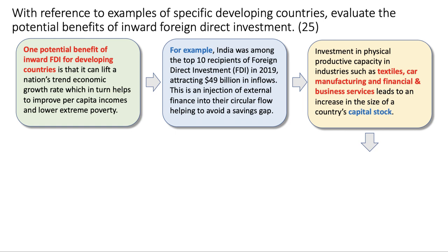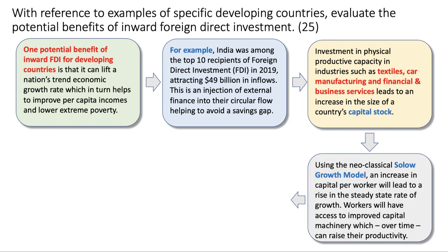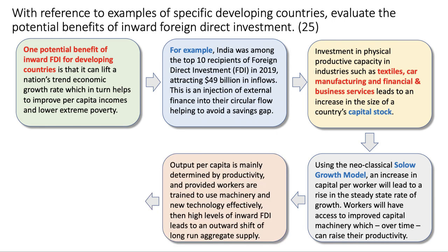Investment in physical productive capacity in industries such as textiles, car manufacturing, and financial services leads to an increase in the size of a country's capital stock. Using the neoclassical Solow model — or you may have used the Harrod-Domar growth model — an increase in capital per worker will lead to a rise in the steady-state growth rate. Workers will have access to improved capital machinery which over time can raise productivity, and output per capita is mainly determined by productivity. Provided workers are trained to use machinery and new technologies effectively, high levels of inward FDI lead to an outward shift of long-run aggregate supply.